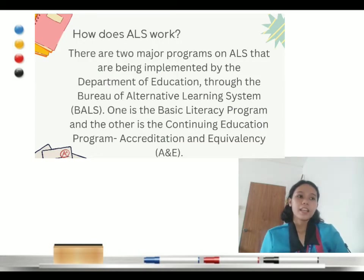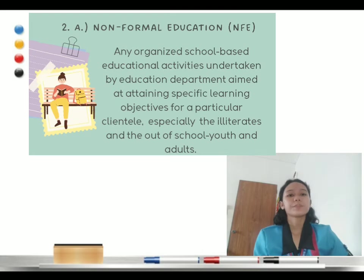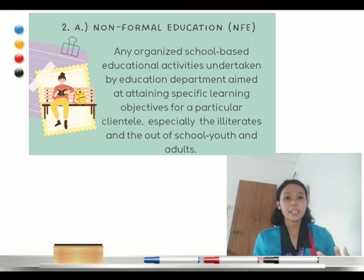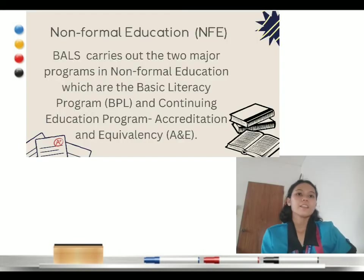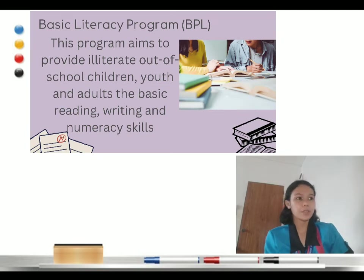So how does ALS work? In the alternative learning system, there are two major programs being implemented by the Department of Education through the Bureau of Alternative Learning System or BALS. The first is the basic literacy program, and the other is the continuing education program or accreditation and equivalency. Under the alternative learning system, the first sub-type is non-formal education, targeting students who are illiterate — those who cannot read and write — and out-of-school youths and adults. The first program is the basic literacy program or BLP.